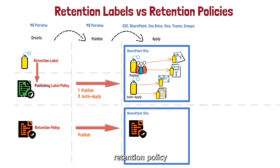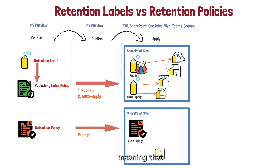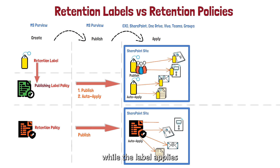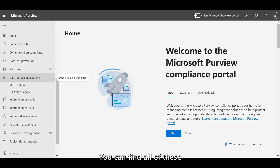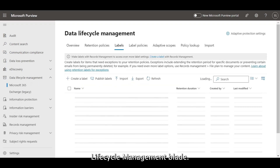Now, let's take a look at the retention policy that was previously published to our SharePoint site. A retention policy is applied to the entire site, meaning that all documents found on that site are subject to the retention policy. So the retention policy applies to the container, while the label applies to the individual items.